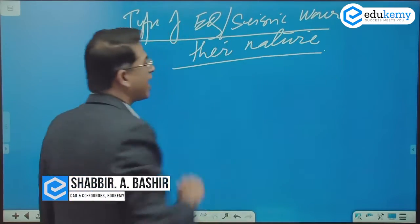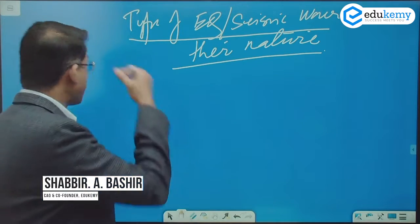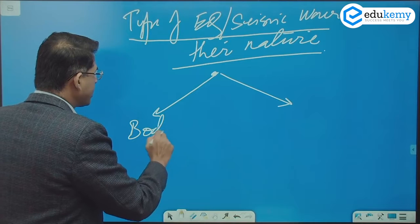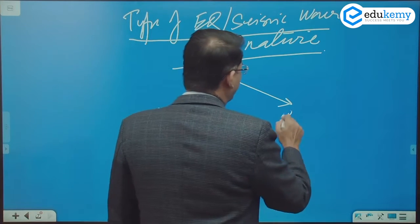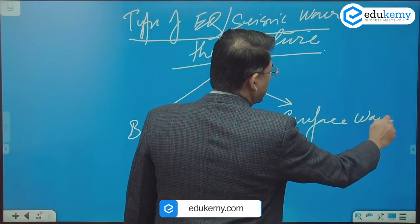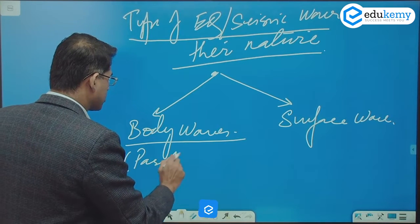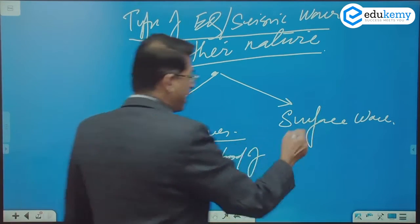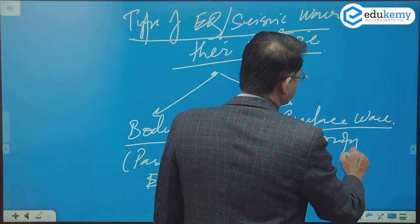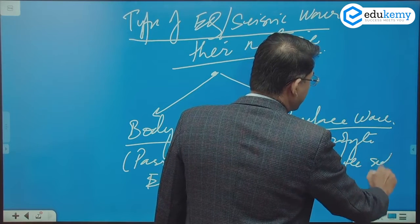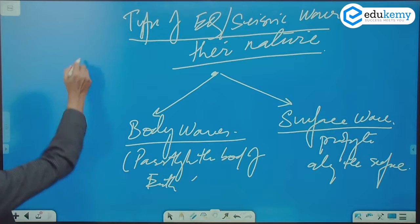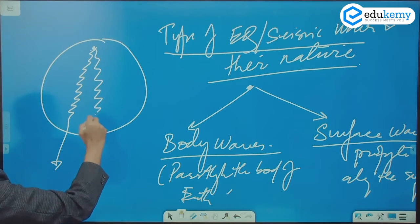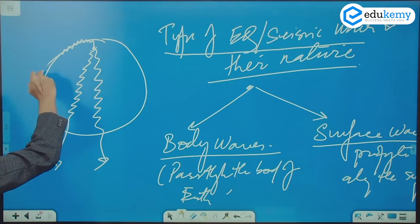There are two types of seismic waves: body waves and surface waves. Body waves pass through the body of the earth, while surface waves, as the name suggests, propagate along the surface. If this is the earth, there are some waves that pass through it and some waves that pass along the surface.